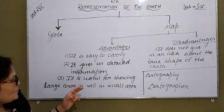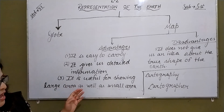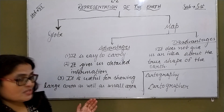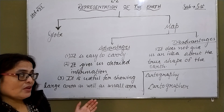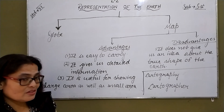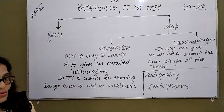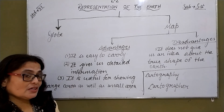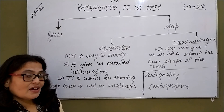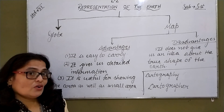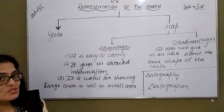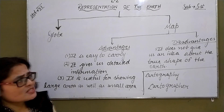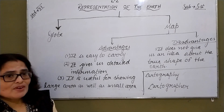A map is also useful for showing large areas as well as small areas. If we want to see the map of the world, we can use it. If we want to see the map of a country, a state, a village, or a town, we can also use the map. Now, besides all these advantages, maps have disadvantages also.